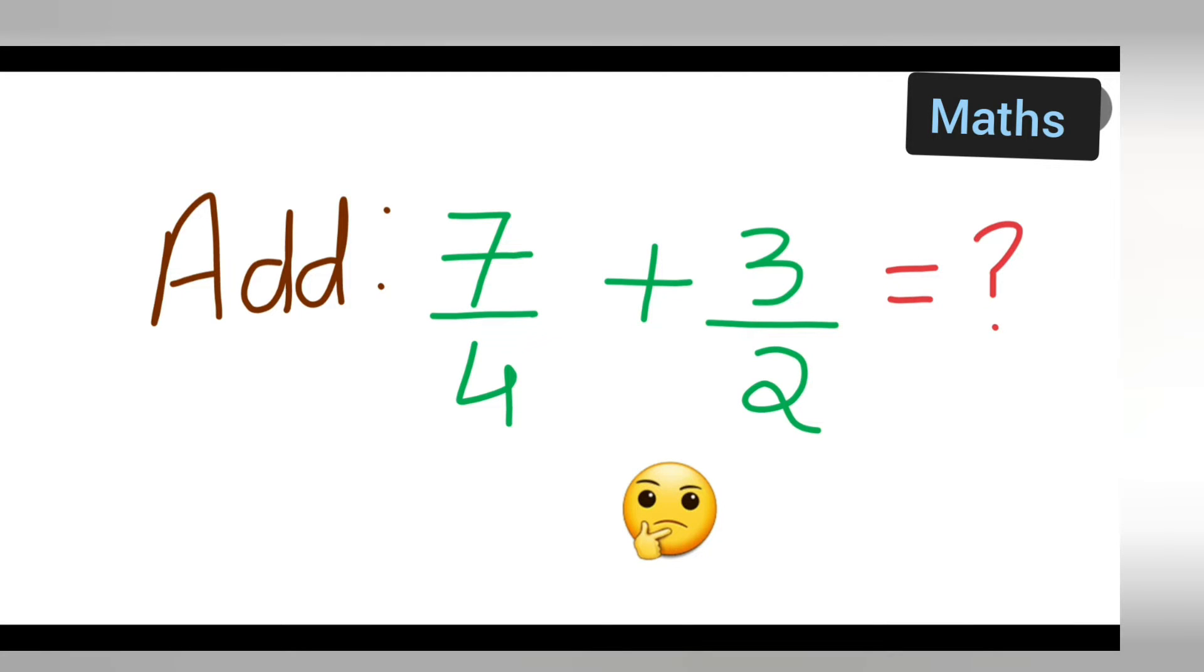Welcome to today's class of mathematics. Today's question is how to add 7 upon 4 plus 3 upon 2. The denominators are different, so how do we add when you have two different denominators?